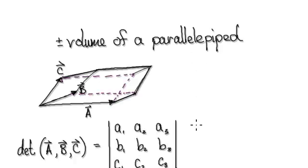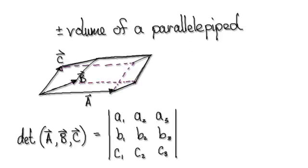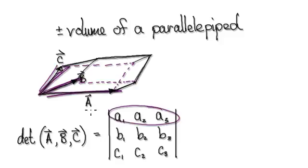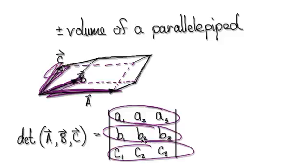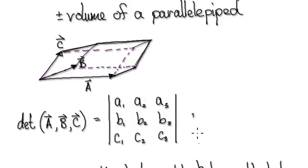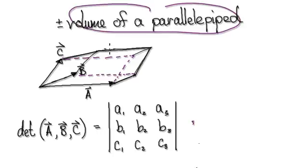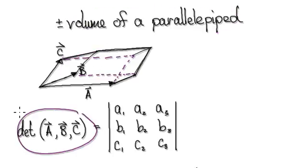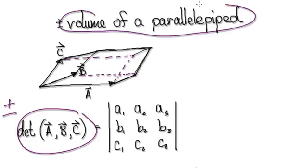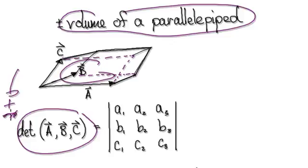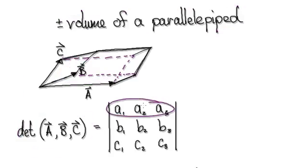Then we moved on to this. If you have three vectors — vector A, vector B, vector C — and you mindlessly compute the determinant, that will give you the volume. The determinant could be a positive number or it could be negative. But when it comes to the volume, just extract the positive version — ignore the negative. So this is with three vectors.